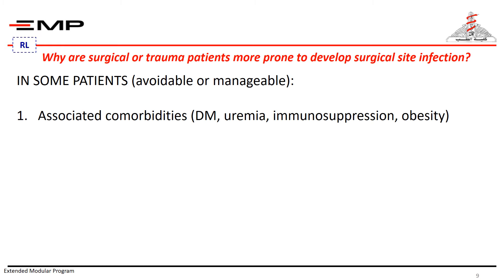Surgical patients are more prone to develop surgical site infection because of several factors. Other factors are present in some patients and can be avoided or taken into consideration during management. Associated comorbidities in some surgical patients can further compromise immunity and healing power — these are the higher risk group for developing surgical site infection. Patients with diabetes, uremia, or patients receiving immunosuppression are prototypes of these patients. Obese patients are also more susceptible.